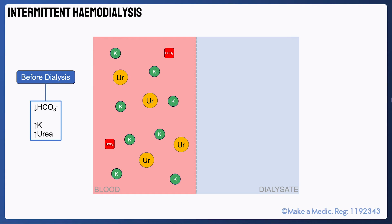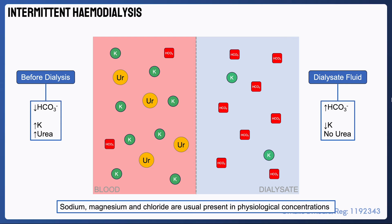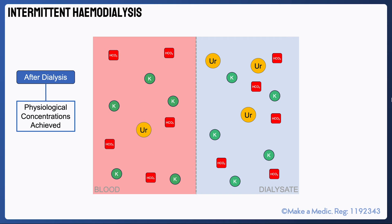Now let's look at how these principles apply to dialysis. Before someone with end-stage renal failure starts a dialysis session, you would expect the bicarbonate concentration of their blood to be low, and the serum potassium and urea concentrations to be high. The dialysate fluid has essentially the opposite composition — high bicarbonate, low potassium, and no urea. As per the principles of diffusion, solutes present at a higher concentration in the blood will diffuse across into the dialysate, and vice versa. In short, potassium and urea will be removed from the blood, and bicarbonate will move into the blood.